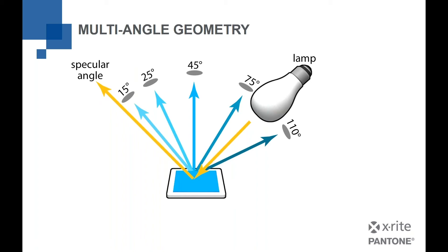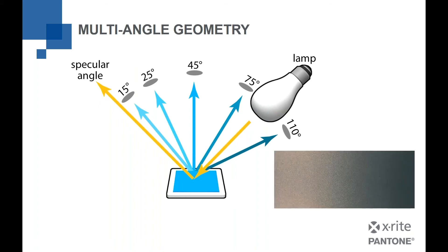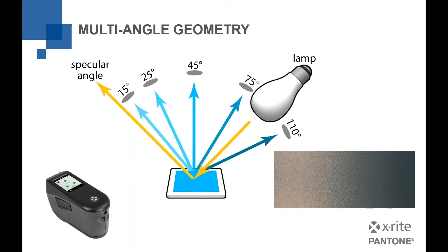Those angles are used to measure color effects like automotive finishes — depending on what angle you measure at, you get a different color, such as gold or a bluish gray. We have handheld versions of that, like the MA5QC device, which measures those angles. Essentially, it's five spectrophotometers in one.